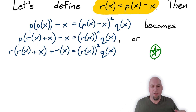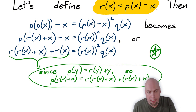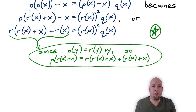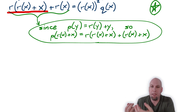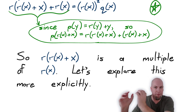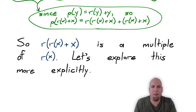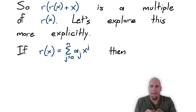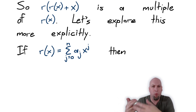When I replace p everywhere using r(x) = p(x) minus x, the equation boils down to: r(r(x) + x) + r(x) = r(x) squared times q(x). Now, looking at this equation, the term r(r(x) + x) is ugly, but I notice it must be a multiple of r(x) itself, because all the other terms in the equation have a factor of r(x). So I'd like to understand better why r(r(x) + x) has r(x) as a factor.